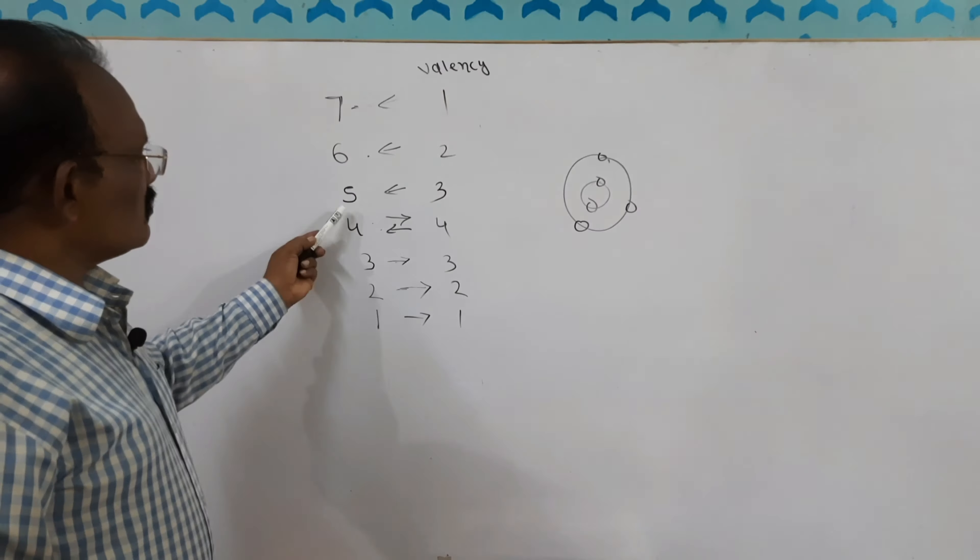To find the valency of any element you need to know the atomic numbers of chemical elements. We will see you in another video with another interesting topic — till then, bye.